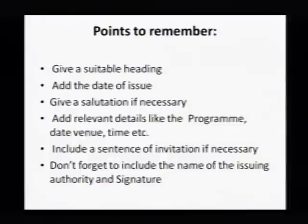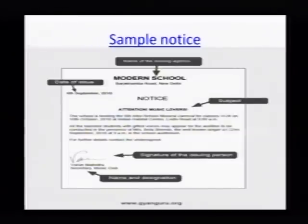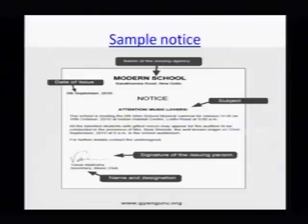Give a suitable heading, add the date of issue, give a salutation if necessary, add relevant details like the program, date, venue, time, etcetera. Include a sentence of invitation if necessary. Do not forget to include the name of the issuing authority and signature. Here is a sample notice given. You just see here — the name of the issuing authority is given: 'The Modern School'. The date of issue is given on the left side. And the subject, 'Attention Music Lovers', and the signature — the content is given in the middle: 'Attention Music Lovers, the school is hosting the sixth inter-school musical competition' — like that. The signature of the issuing person is there, and the name and designation is there. This is the sample of a notice.